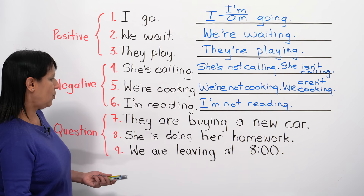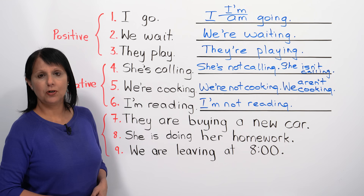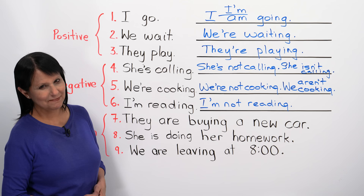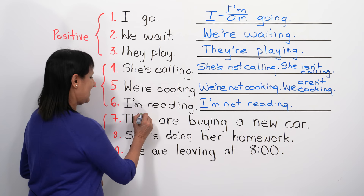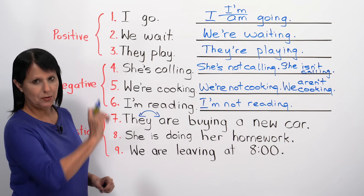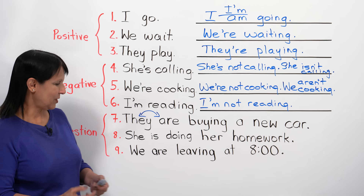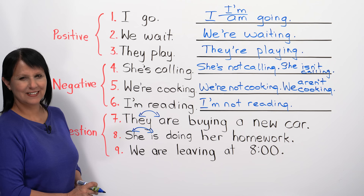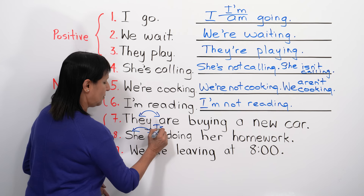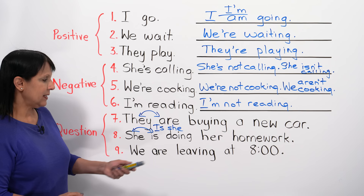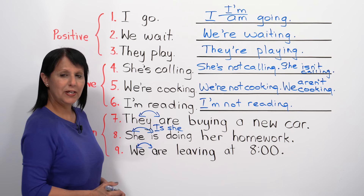Now let's make sentences into questions. 'They are buying a new car' — make it a question: 'Are they buying a new car?' Just move the subject and verb to be around. 'She is doing her homework' becomes 'Is she doing her homework?' And 'We are leaving at eight' becomes 'Are we leaving at eight?' Remember to capitalize the first word and add a question mark at the end.